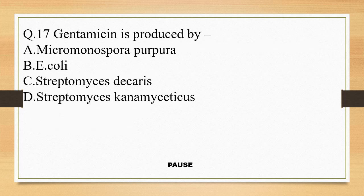Question 17. Gentamycin is produced by: option A, Micromonospora purpurea; option B, E. coli; option C, Streptomyces decaris; and option D, Streptomyces griseocarnes. And the right answer is option A, Micromonospora purpurea.